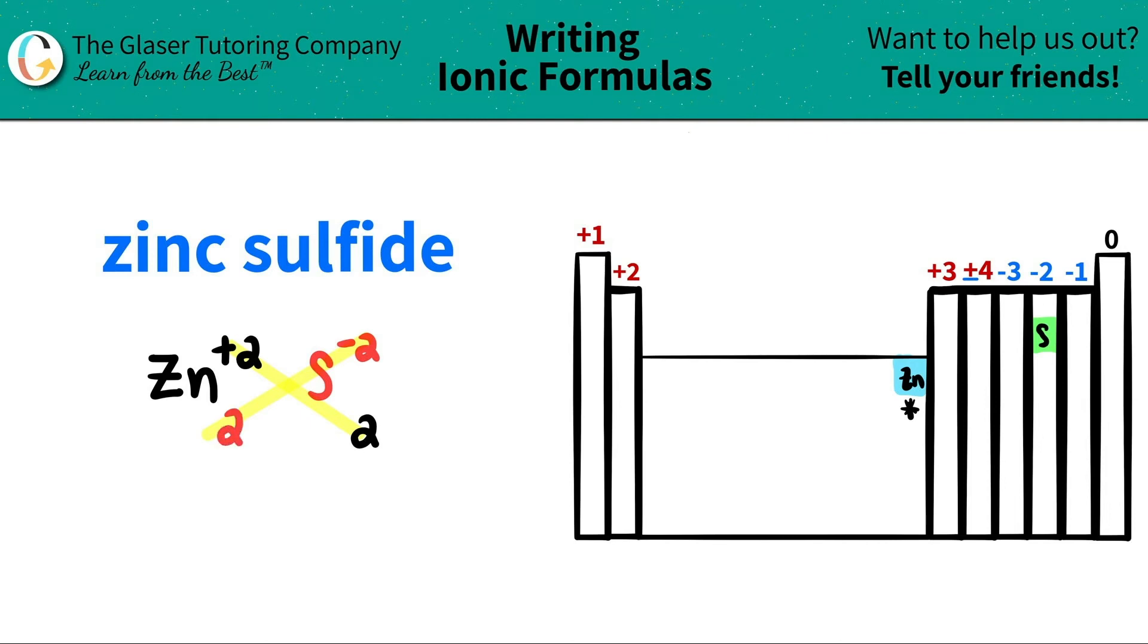But now here's the catch. Ionic compounds always need to be in the most simplified form. If you have the same number that's greater than two for both elements, it needs to be simplified. It needs to be divided by a number so that it could be a simpler number, a smaller number.